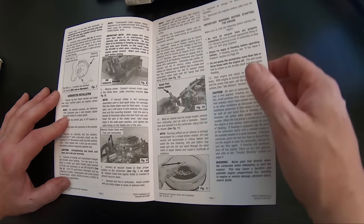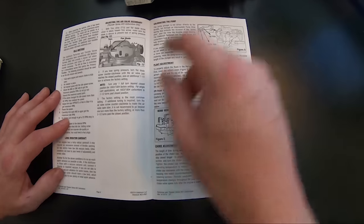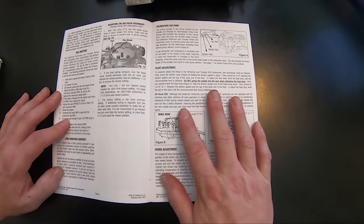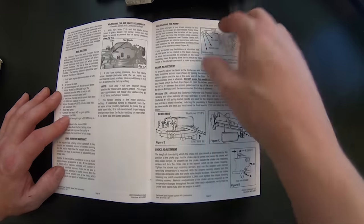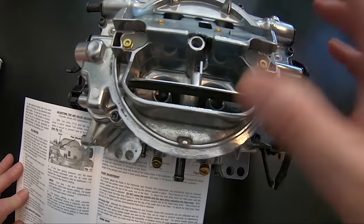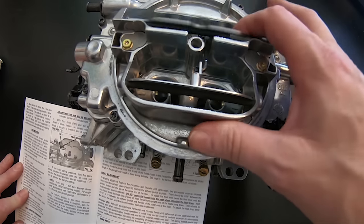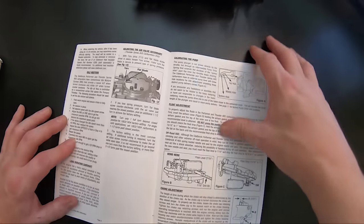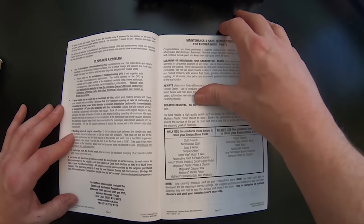It'll tell you everything about the fittings that are on there. We talked about the two vacuum ports on the front of the carburetor. It talked about the PCV valve. It'll show you how to adjust the secondaries. If you're working with an AVS style carburetor, it'll show you how to adjust those. Everything you need is pretty much in this book.